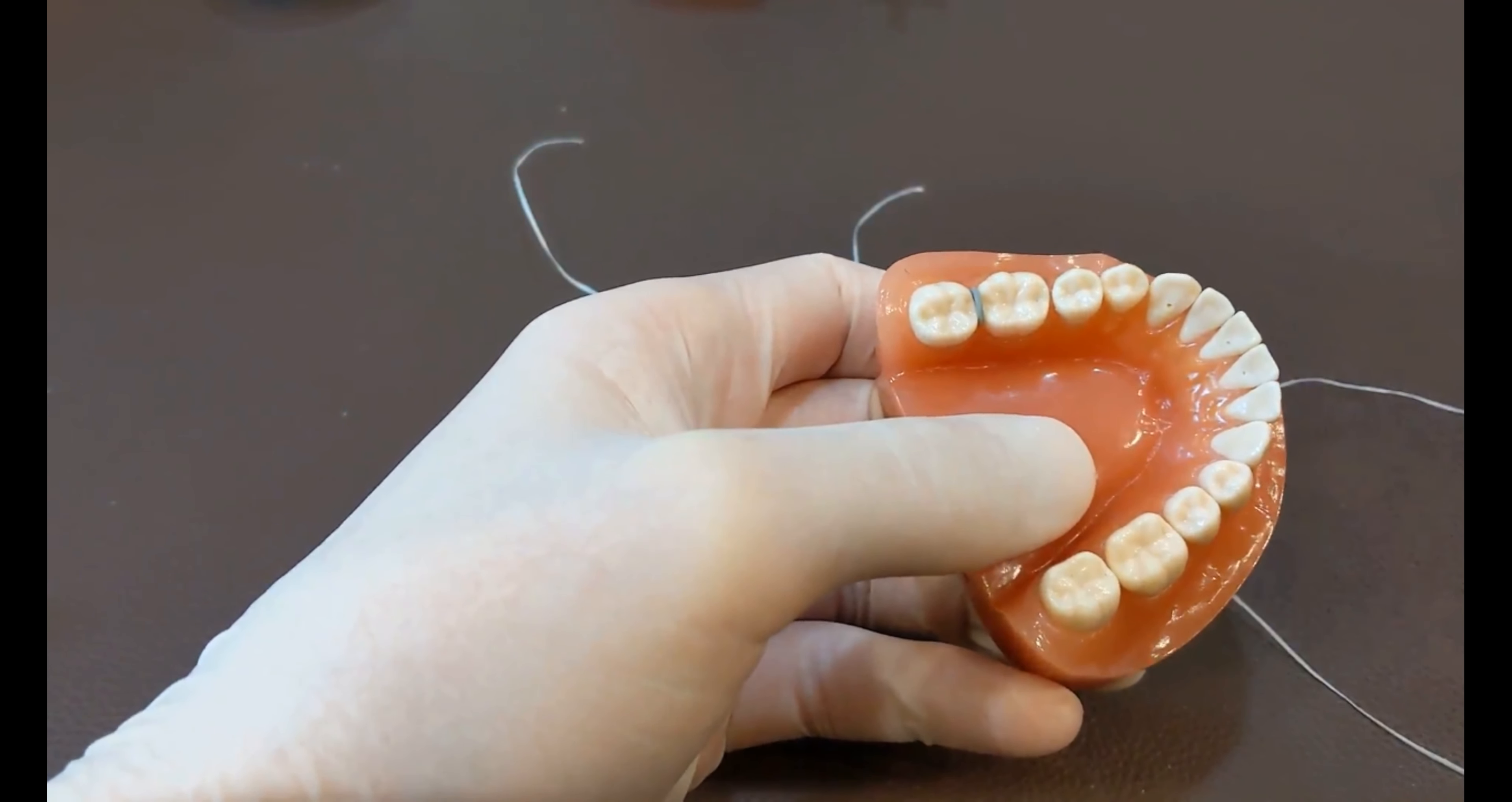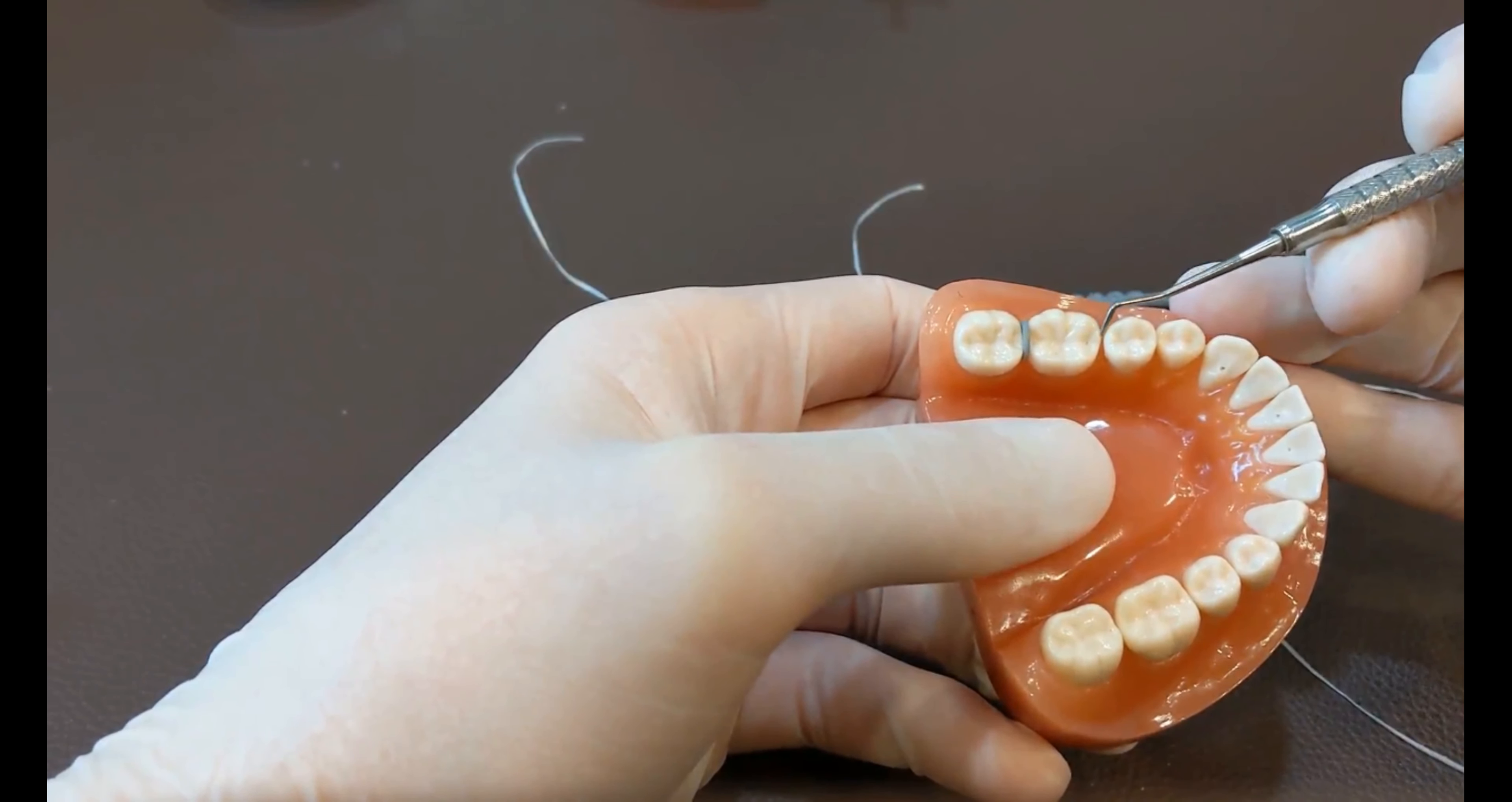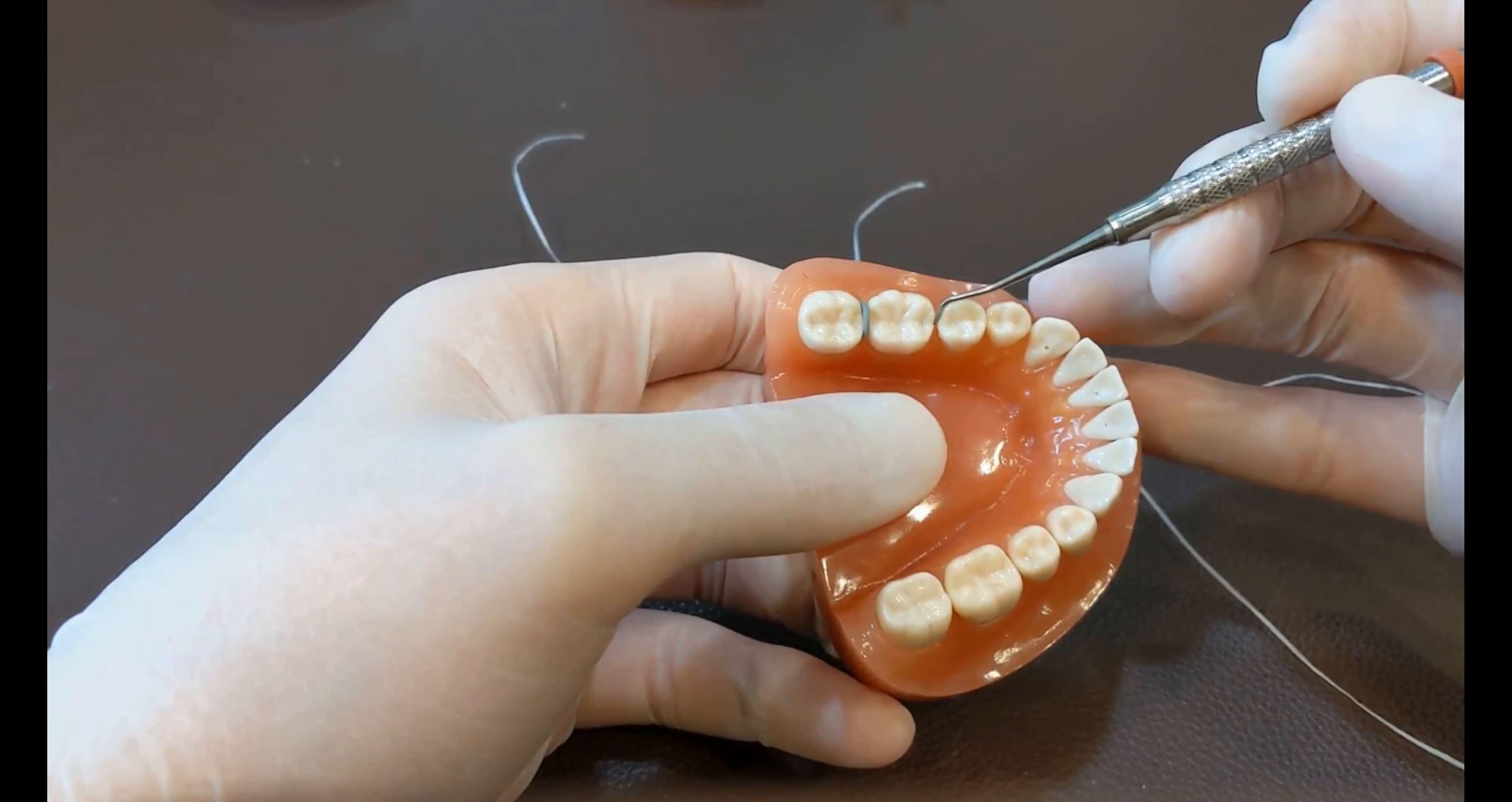To place a separator between the teeth, the reason you would want to place a separator is to open up a little bit of space in order to place a band at the next appointment. A band fits all the way around the tooth, so you need to make a little room here.